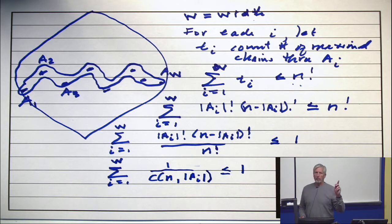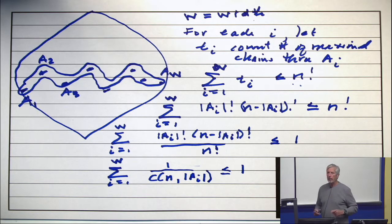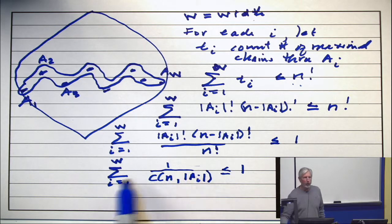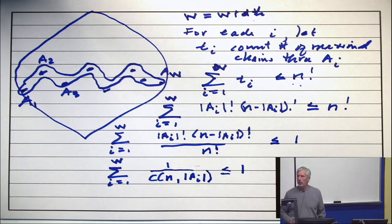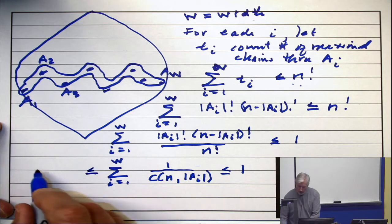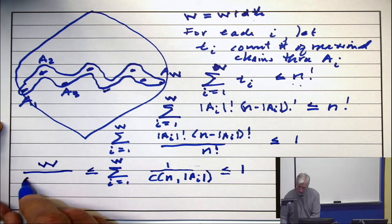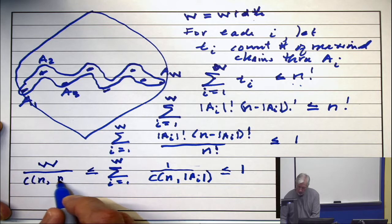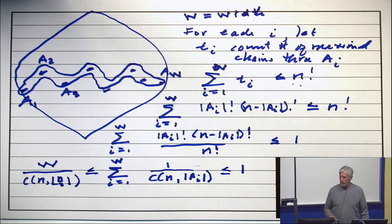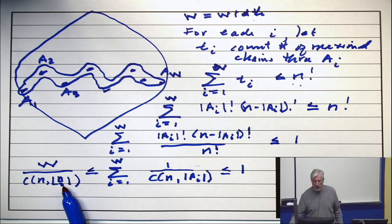Now, what's the biggest binomial coefficient? The one in the middle. So when you take reciprocals, what's the smallest reciprocal? The smallest reciprocal is the one in the middle turned upside downwards. So every one of those terms is greater than or equal to the middle coefficient upside downwards. So this is greater or equal to W over C n n over 2. My handwriting is not the best in the world. Can you see that that's a n over 2?